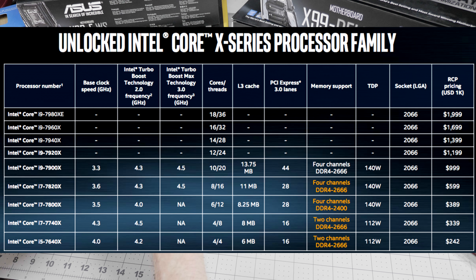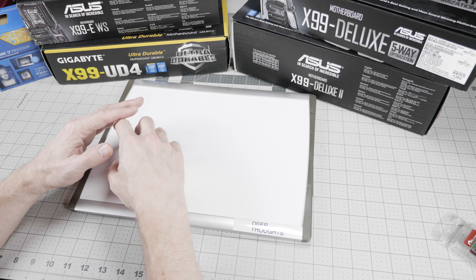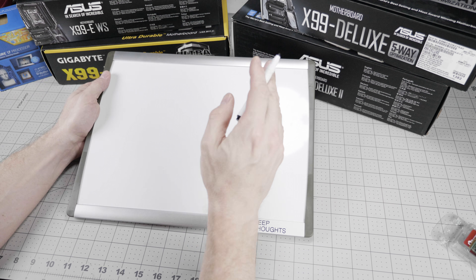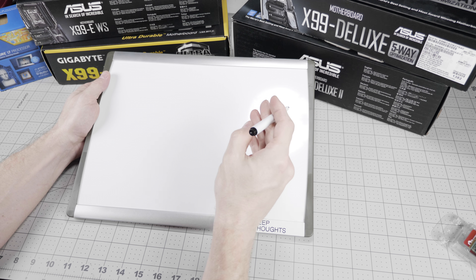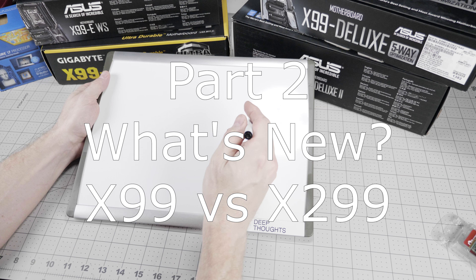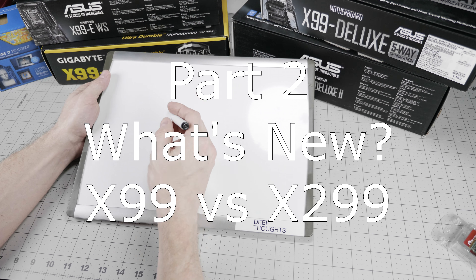Unfortunately, out of this big new lineup of nine CPUs we really end up in the same situation where there are really two CPUs of interest. I'll get to those details in just a few moments. First, let's take a look at what X299 brings to the table versus X99 from a platform standpoint.